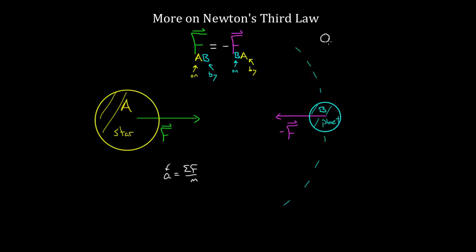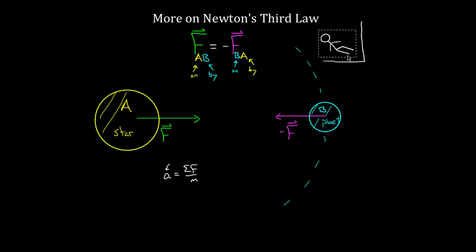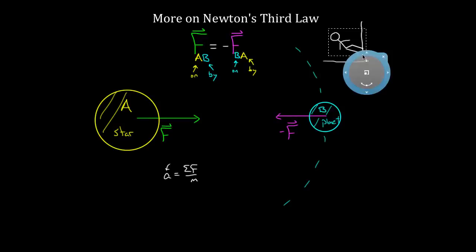Even if I came in all guns blazing, Chuck Norris style, trying to drop-kick some wall — even if I came in flying at this wall — as soon as I start to make contact with the wall, I'm going to exert a force on the wall, and the wall has to exert a force back. So I'd exert a force on the wall to the right — the force on the wall by my foot — and there'd have to be an equal and opposite force instantly transmitted backwards on my foot: the force on my foot by the wall. This happens instantaneously. There is no delay. You can't kick this wall fast enough for this other force to not be generated instantaneously.